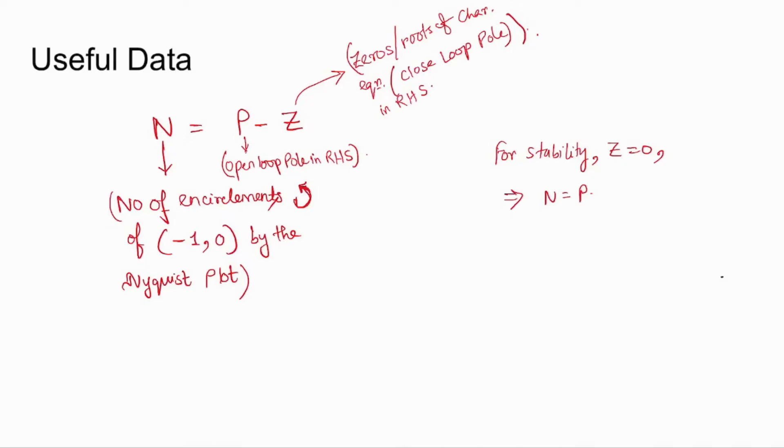For this formula to be valid, N gives us the number of encirclements in anti-clockwise, that is the counter-clockwise direction. So N equal to P minus Z.